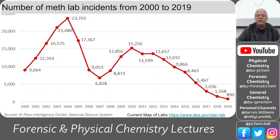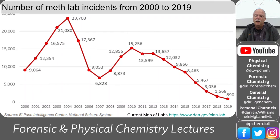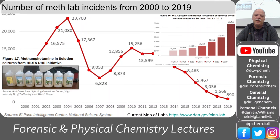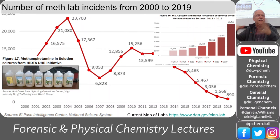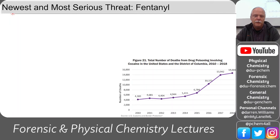Here's the number of meth lab incidents in the US from 2000 to 2019. It looks like a positive trend — we're down to only 890 labs in 2019. But what's really happening is that meth use has not dropped; we're just not synthesizing it here anymore. It's being produced elsewhere and brought across the border.